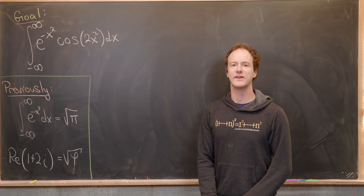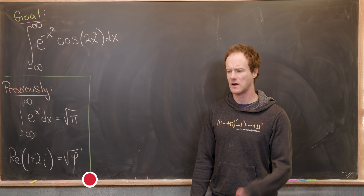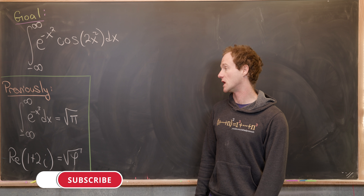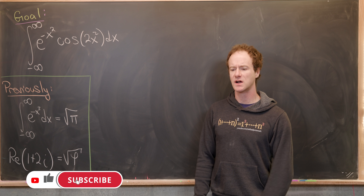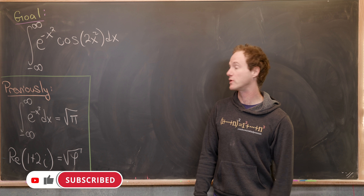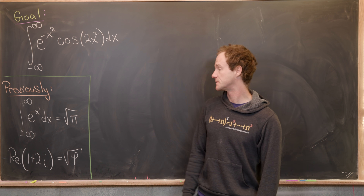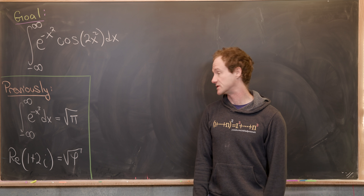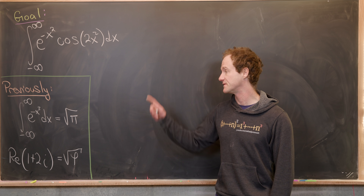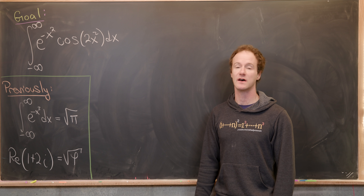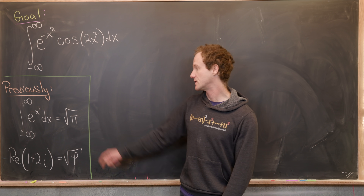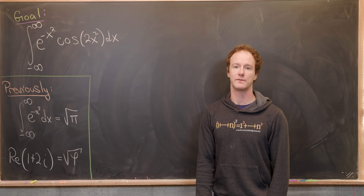Here we're going to look at a nice and quick integral that involves some really important mathematical constants, and we're going to use a couple of tools that we have developed in previous videos. The first one is the Gaussian integral — that's the integral from minus infinity to infinity of e to the minus x squared dx, and that's equal to the square root of pi.